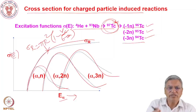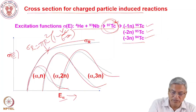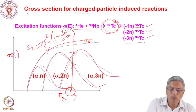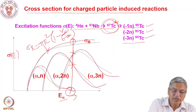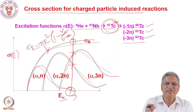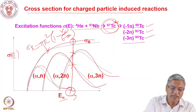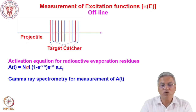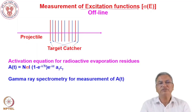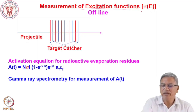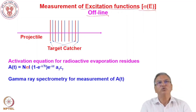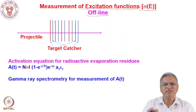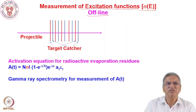As you increase the projectile energy, the compound nucleus is formed with higher excitation energy and different channels open up, producing different products. To measure the cross section, one can do an offline experiment: irradiate the sample in the accelerator, take out the sample, and count the activity in the laboratory on a gamma spectrometry setup. The activity at any time after irradiation is A = N_t σ I × (1 − e^(−λt_i)) × e^(−λt_d), where t_d is the decay time after irradiation, and you also account for the gamma-ray intensity and detection efficiency.